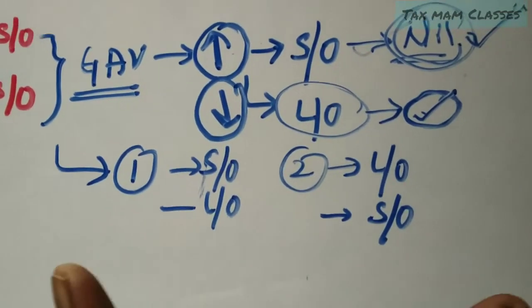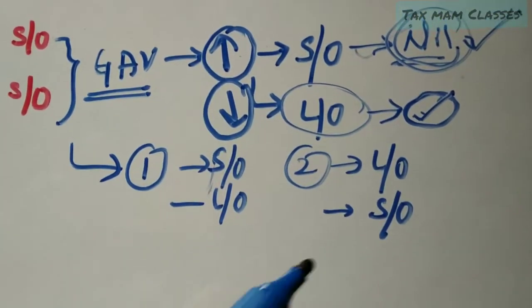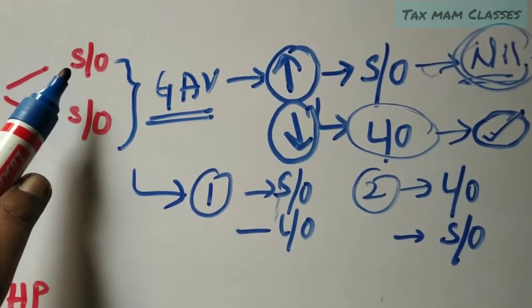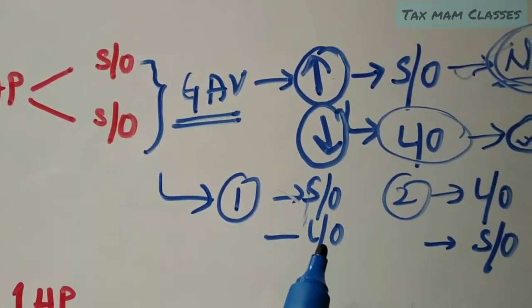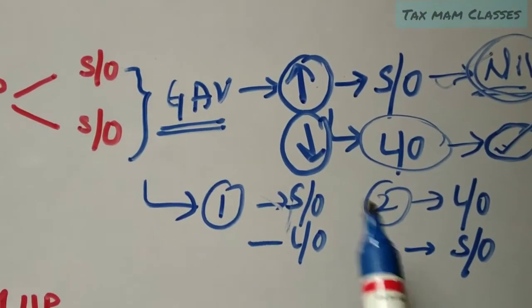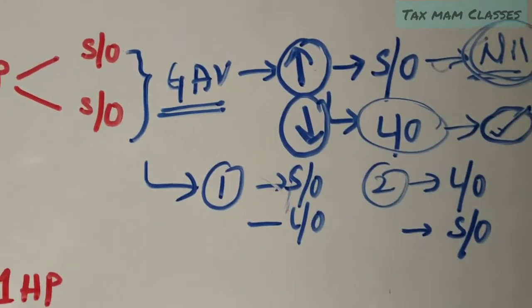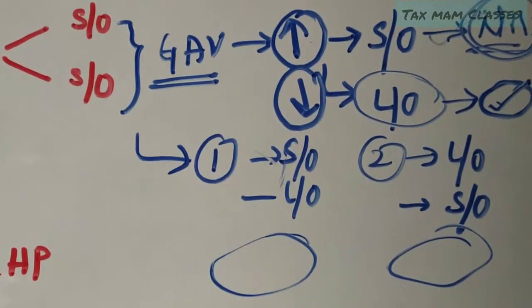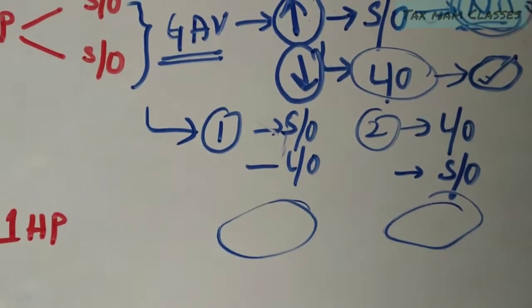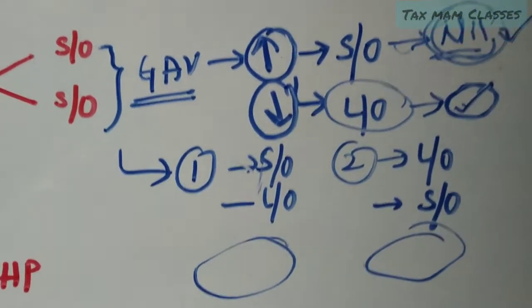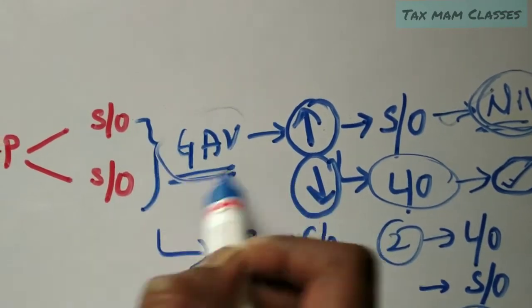For BCom students specifically, they take two plans: Plan 1 — the first house property is assumed as self-occupied and the second as let out; Plan 2 — the first is let out and the second is self-occupied. They solve both and at the end, whichever plan is more beneficial, that answer is taken as the main answer. IPCC students can go directly using the gross annual value comparison.